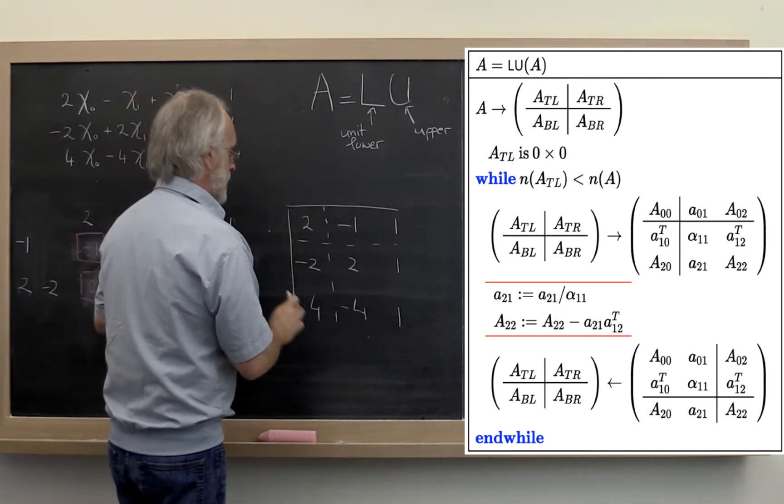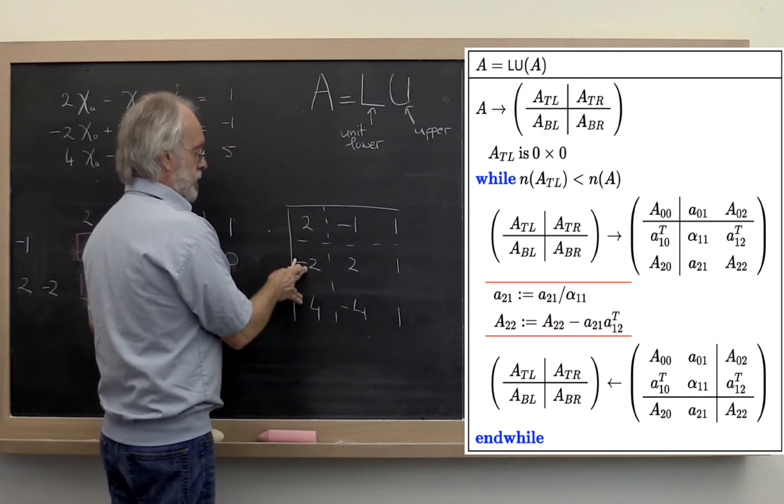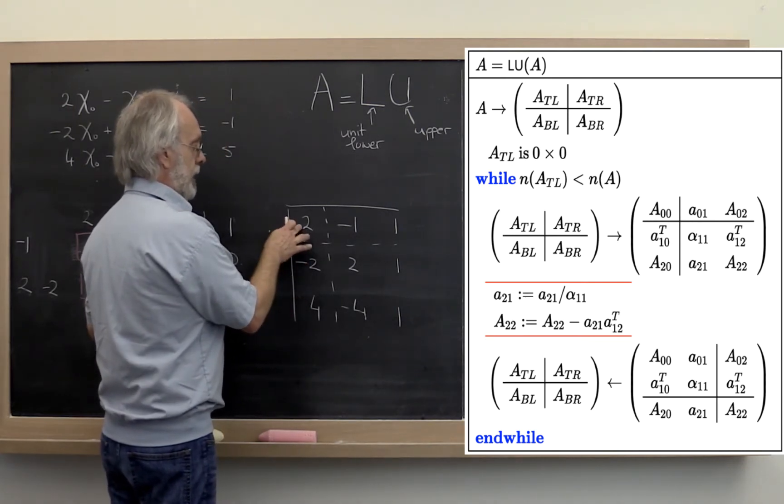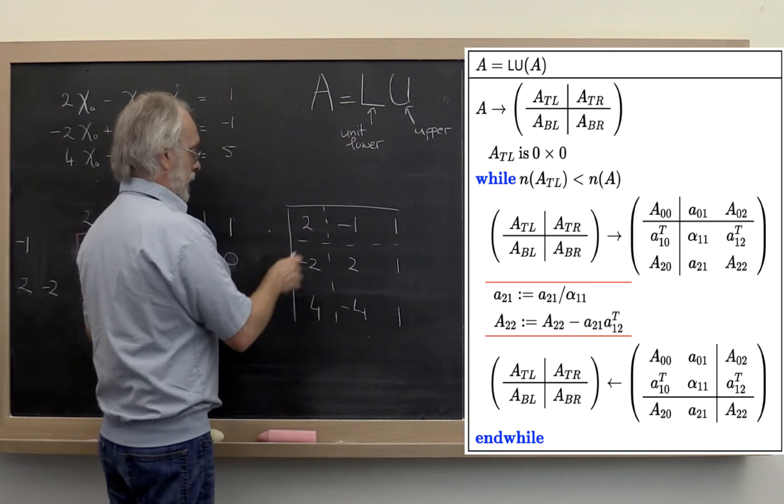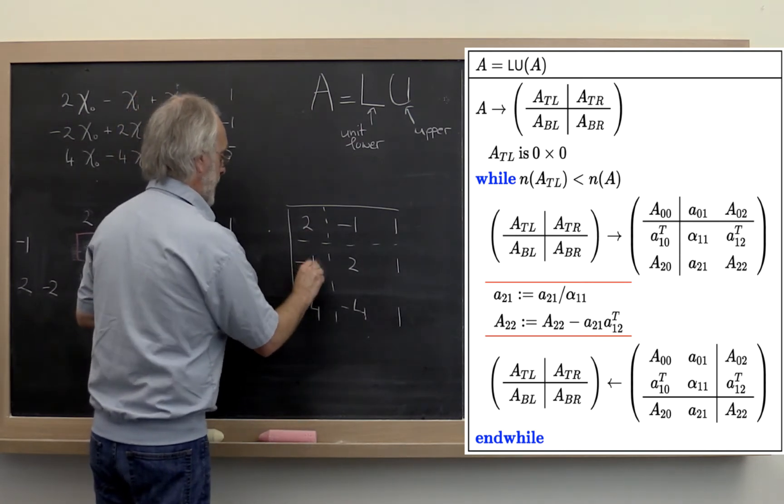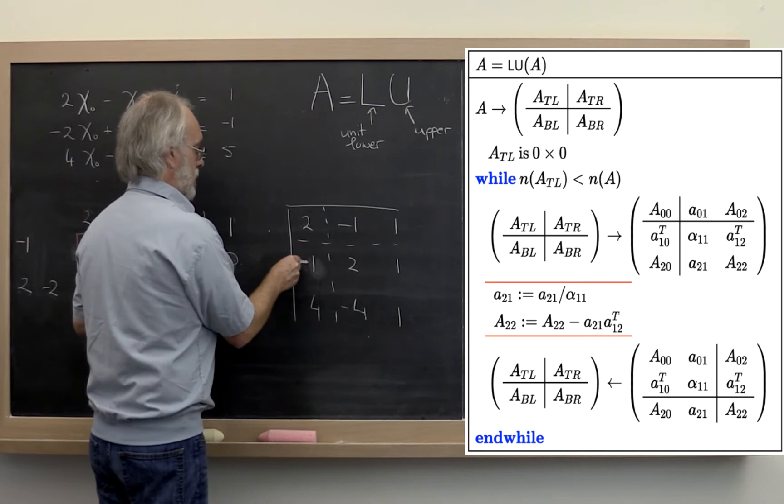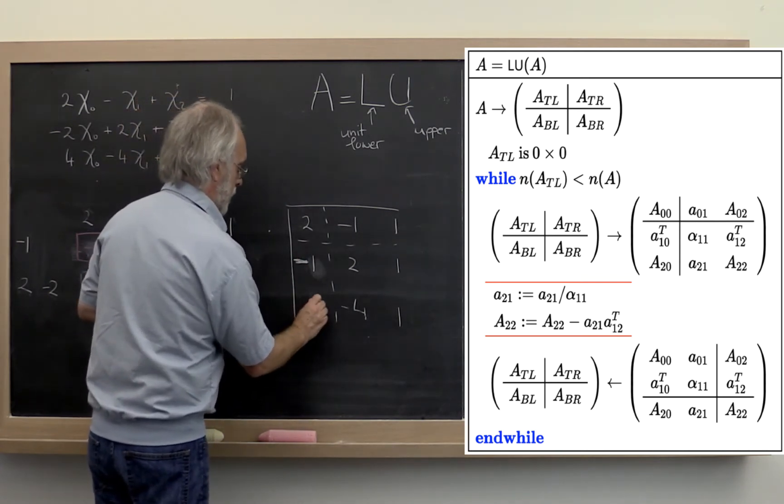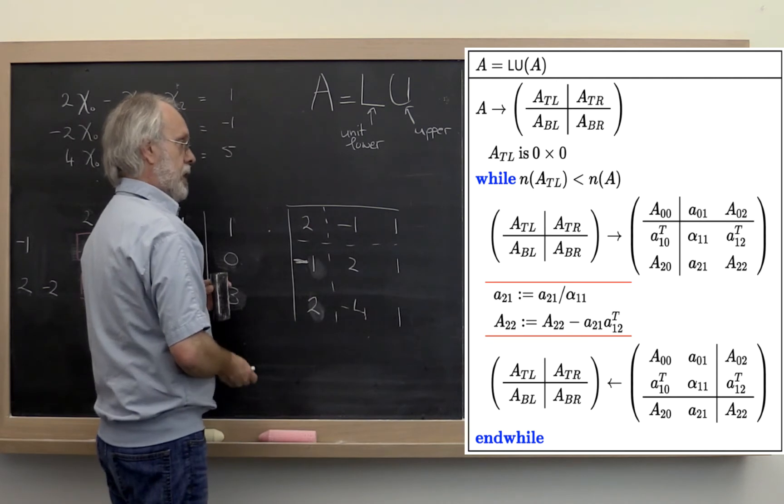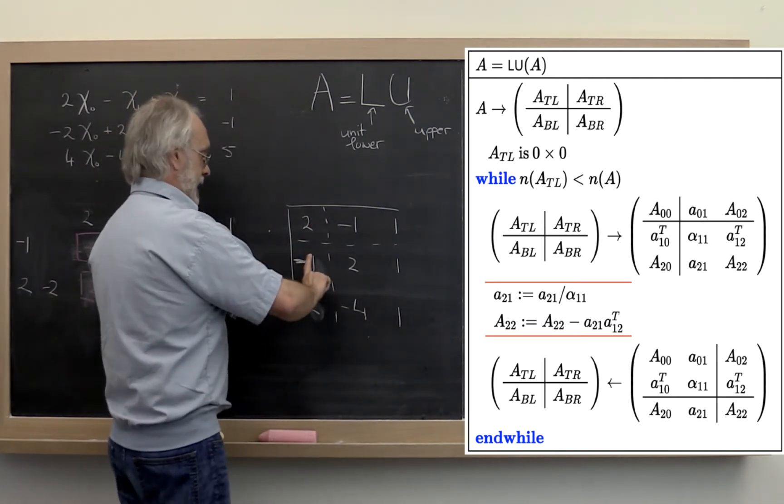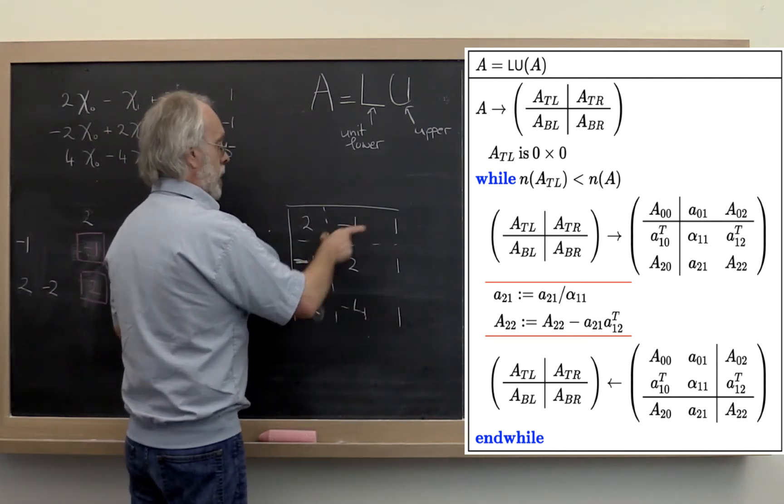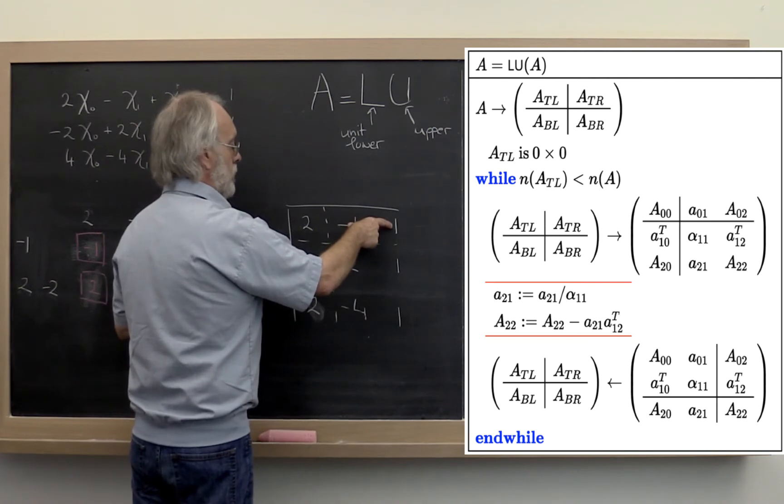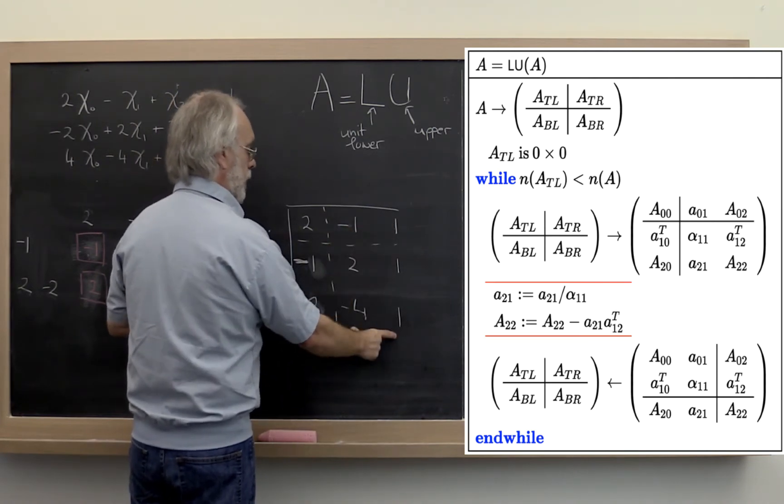The algorithm says take the vector A 2,1 and divide it by alpha 1,1. If you do that, this becomes minus 1, this becomes minus 1, this becomes 2. And then it says take A 2,1, multiply it times A 1,2 transpose and subtract it off of this.